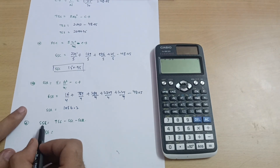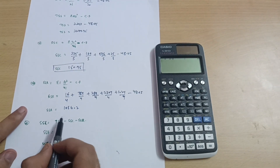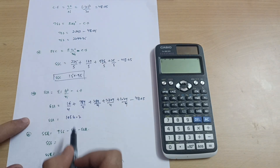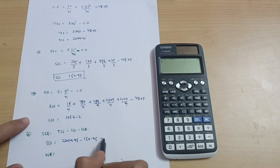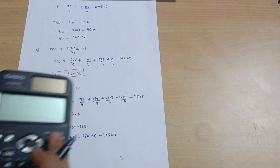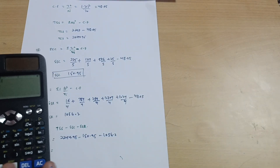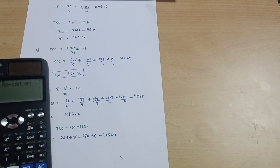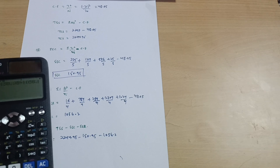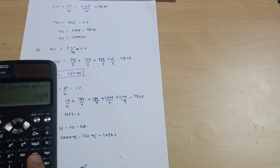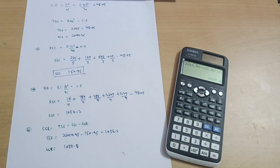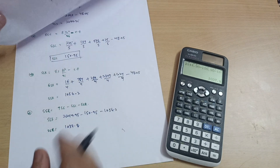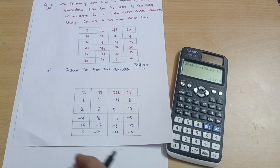Now calculate the sum of squares for error SSE. This equals TSS minus SSC minus SSR: 2244.95 minus 150.95 minus 1056.2, which equals 1037.8.